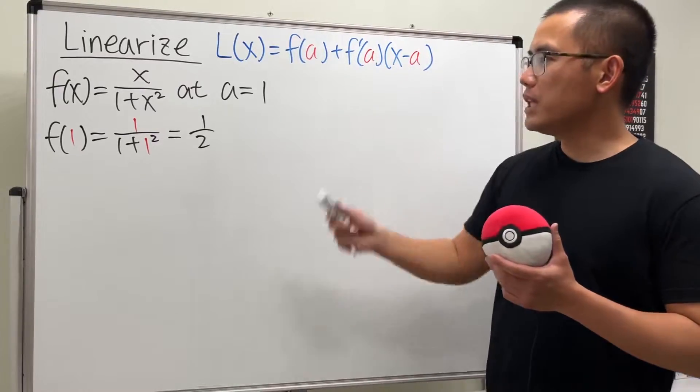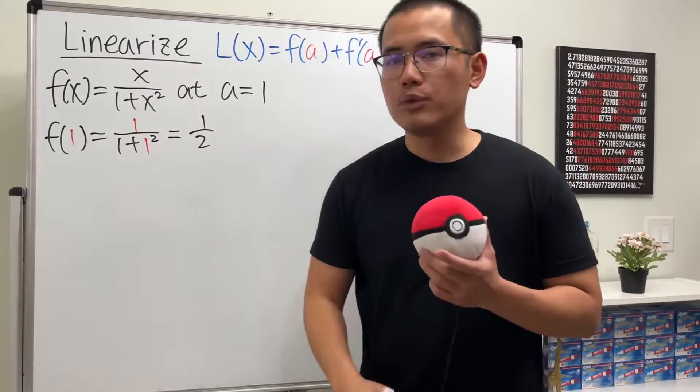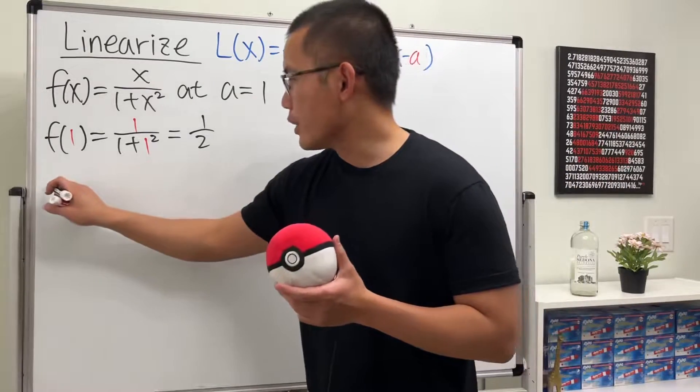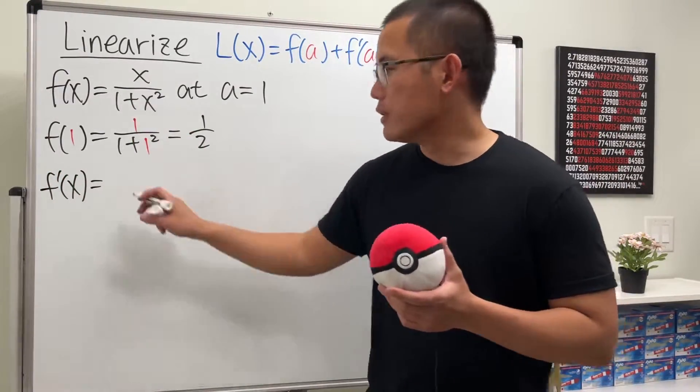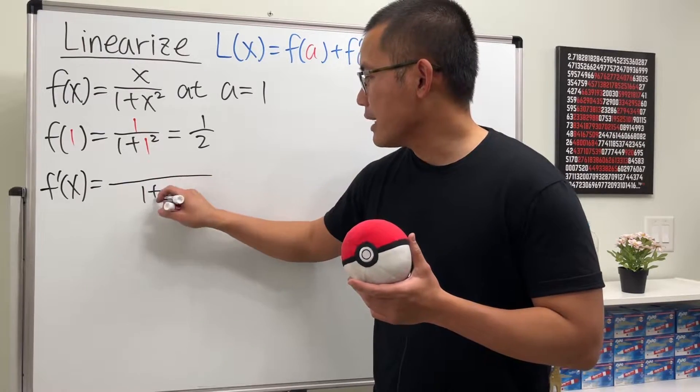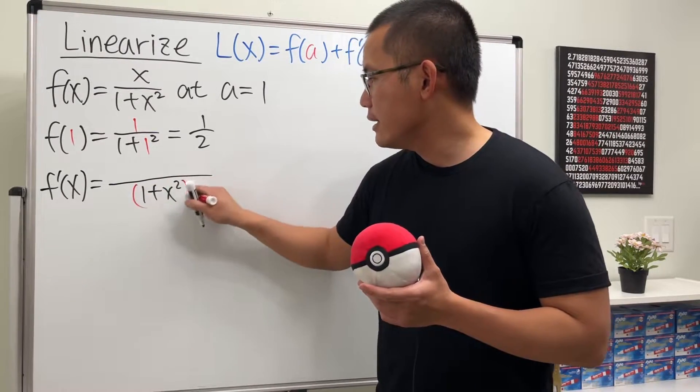Next, we have to get the derivative, and for this one we will have to use the quotient rule. So, here we go. f prime of x. Let's go ahead and square the bottom first. So we have 1 plus x squared, and then square.